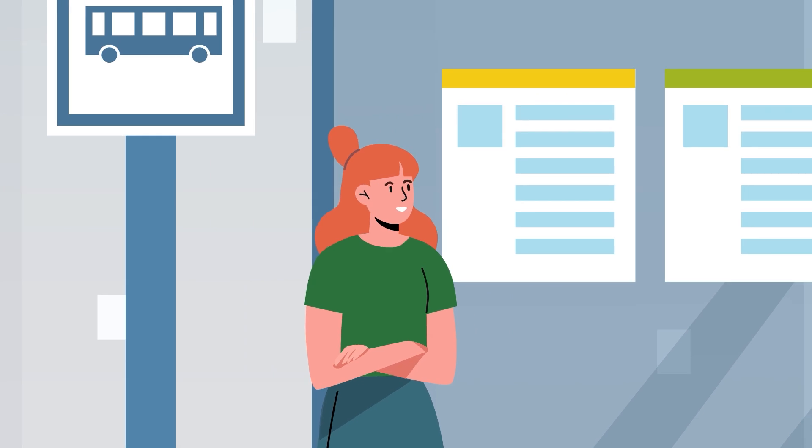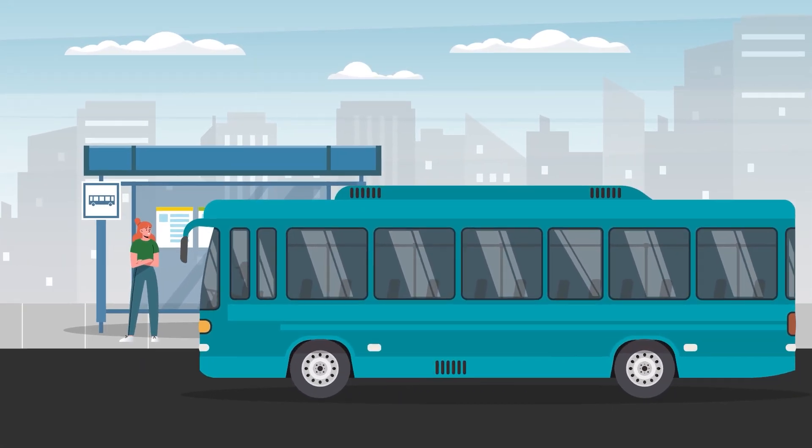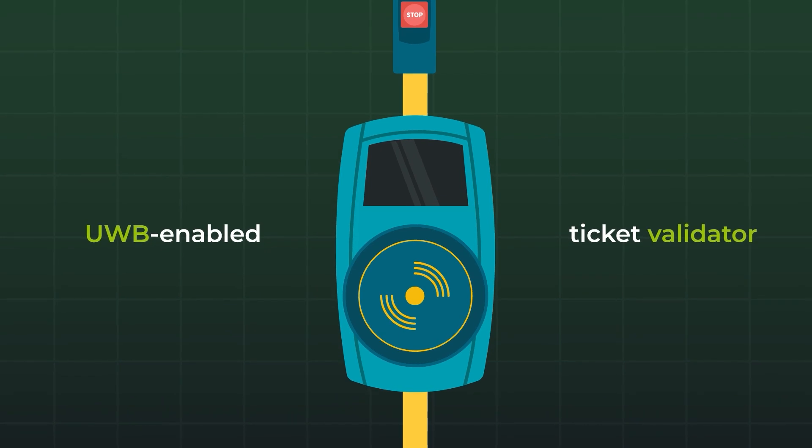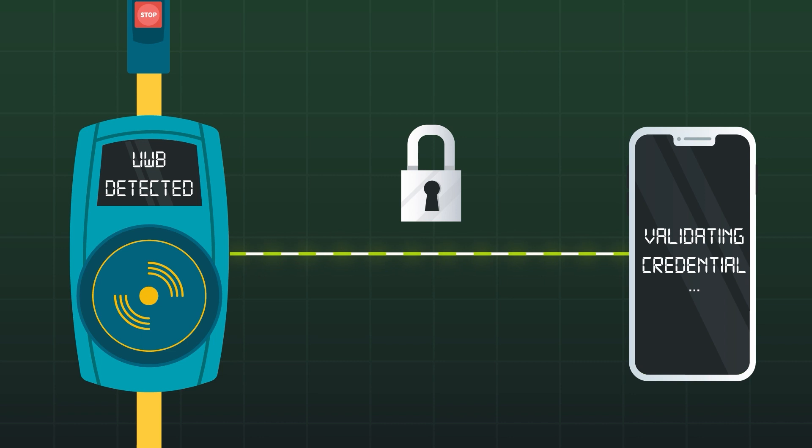With Ultra Wideband, ticket validation in public transport has never been so easy. As soon as the Ultra Wideband enabled ticket validator detects that Jane's smartphone is close by, the credential stored in her phone is automatically validated over a secure connection.